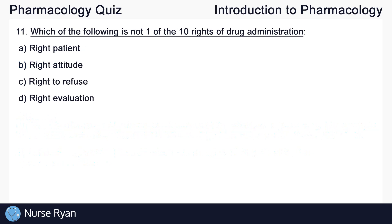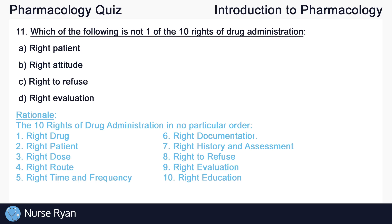Our last question for this quiz, number 11: Which of the following is not one of the 10 rights of drug administration? The right answer here is B — right attitude. The key to this question is which of the following is not one of the 10 rights. A, C, and D are all part of the 10 rights of drug administration that must be followed when giving medications. The right attitude is not part of this list.